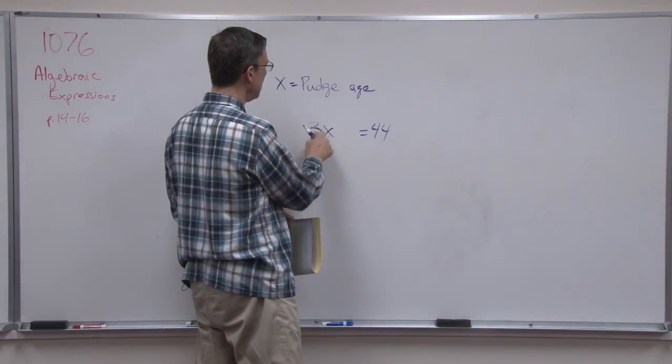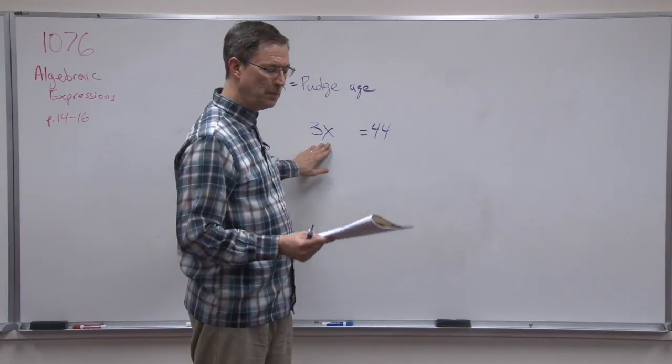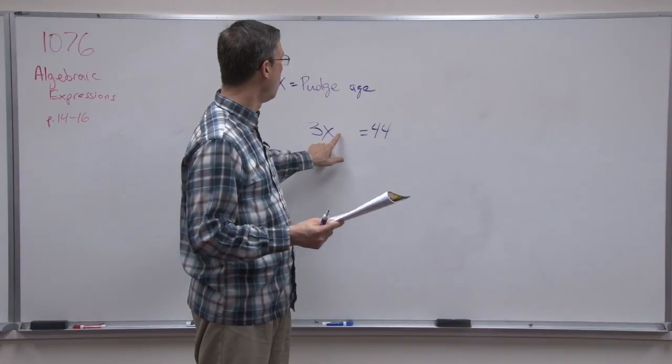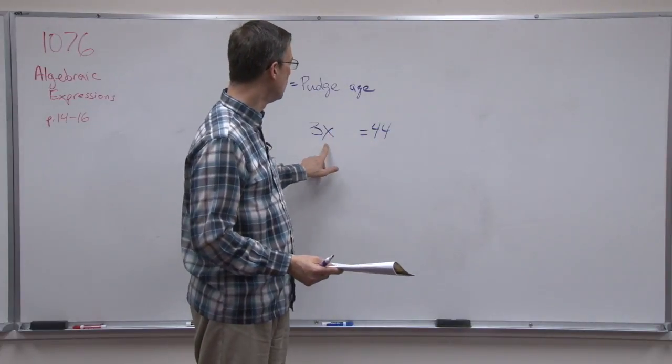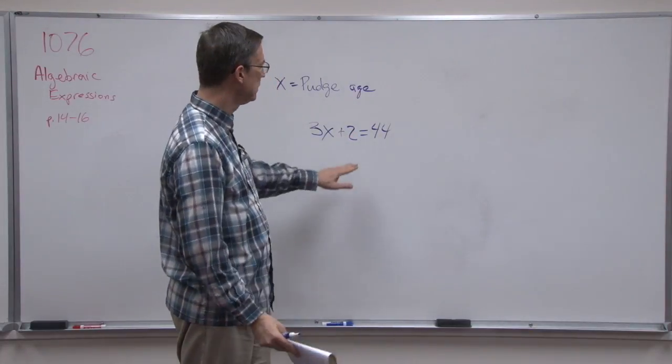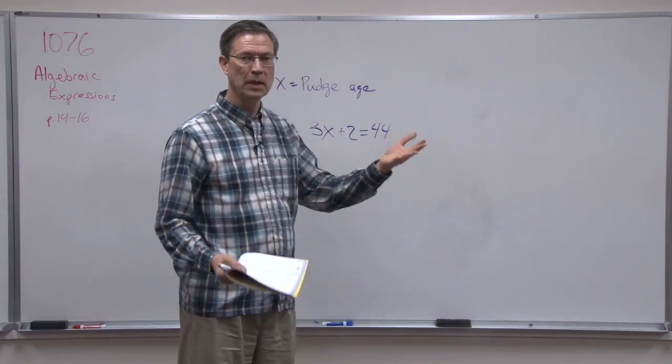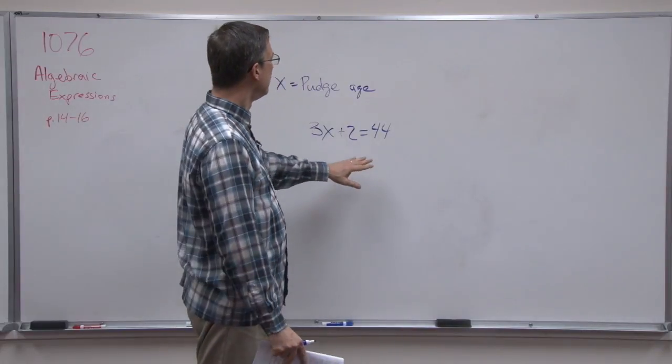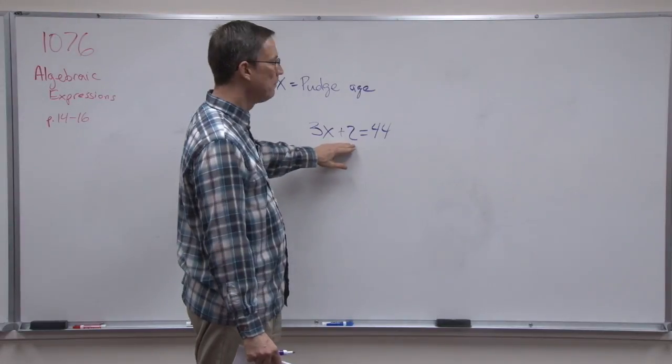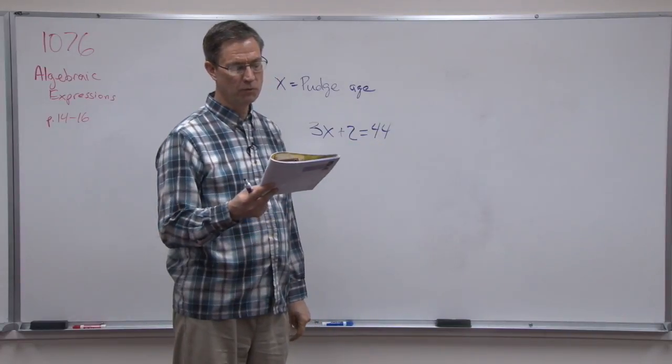Now think about this. If I just did 3X where X is Pudge's age, is her age the same as 3 times Pudge's age? And the answer is no. She's actually 2 years more than this, so these are not equal. So I need to add 2 to this side of this equation to keep this balance. Remember equals always means the two sides are equal to each other. It's kind of like a scale. They have to be balanced. So to balance this equation, keep it balanced, 3 times Pudge's age, add 2 to that, and I would have his mother's age of 44.